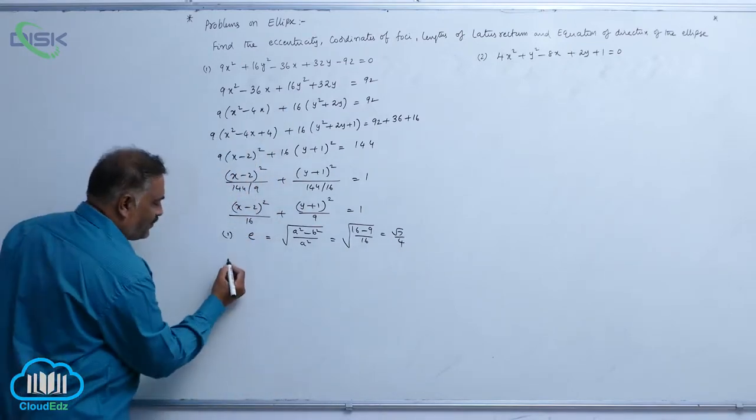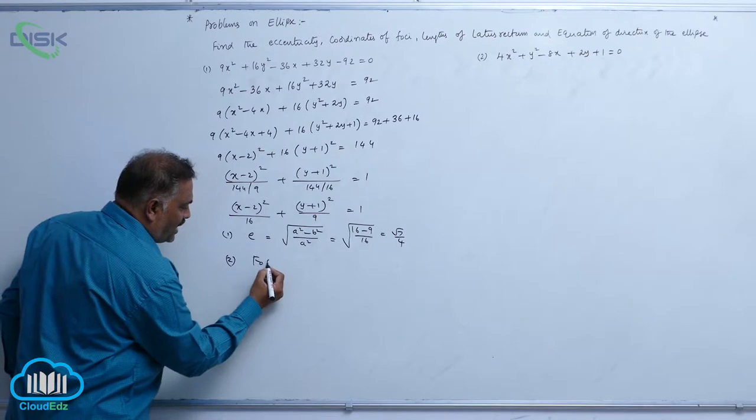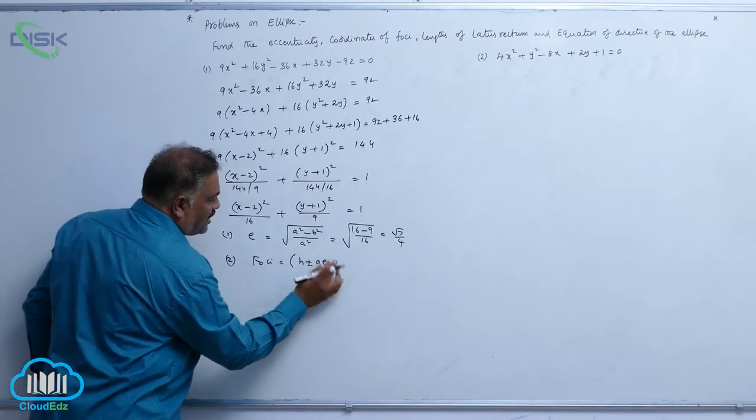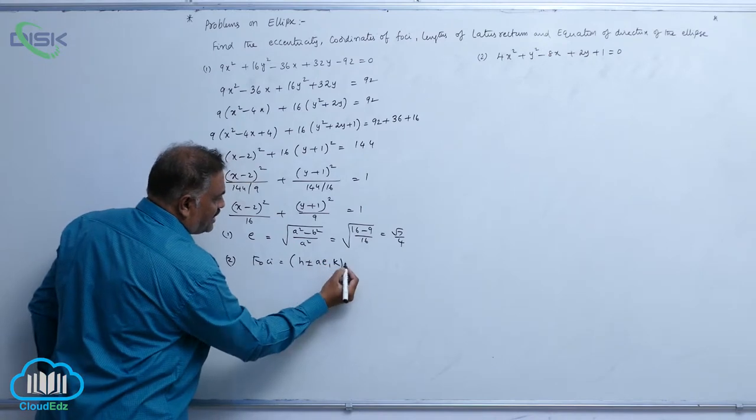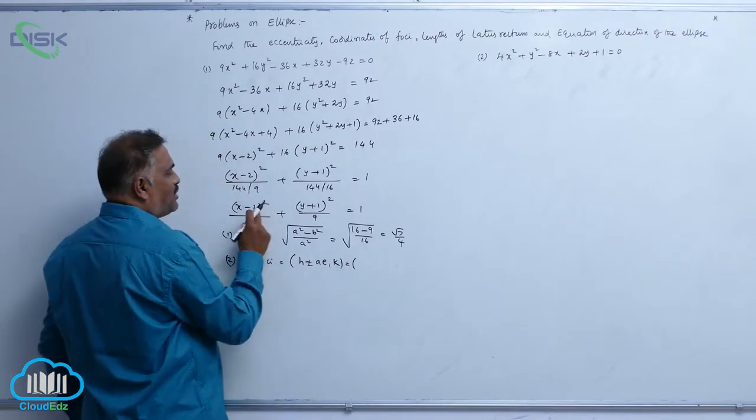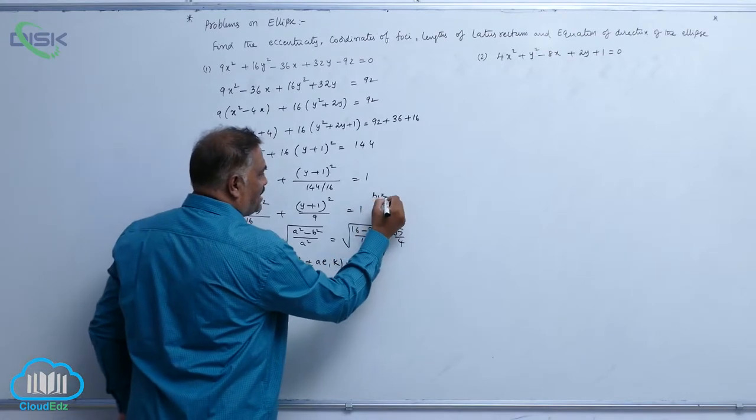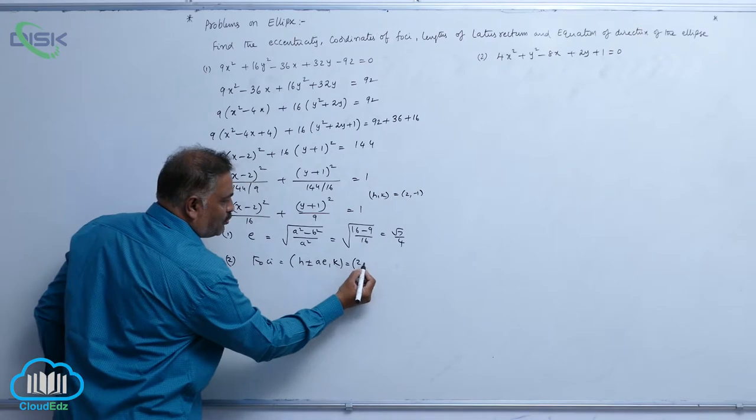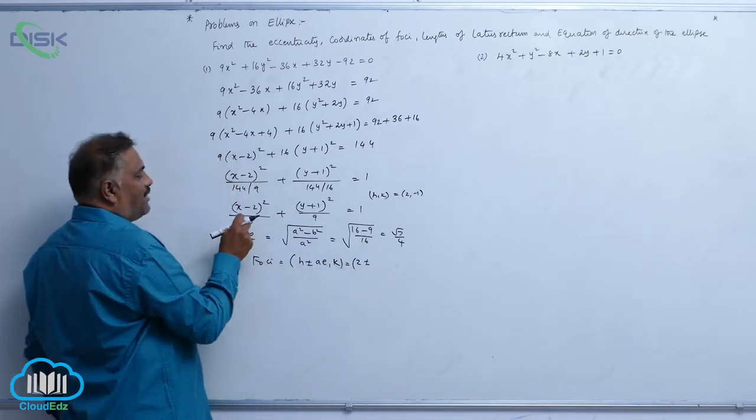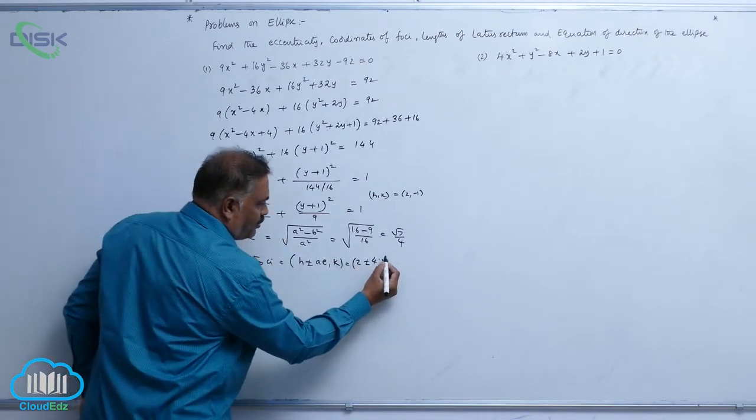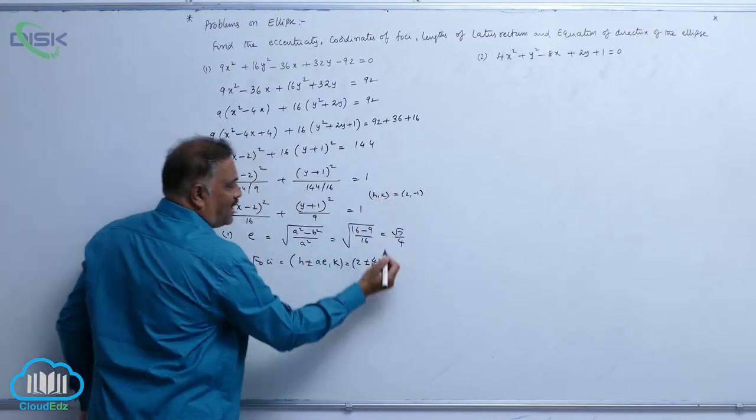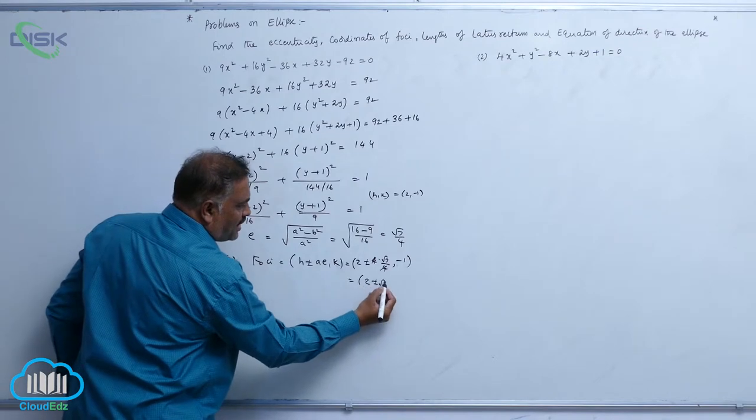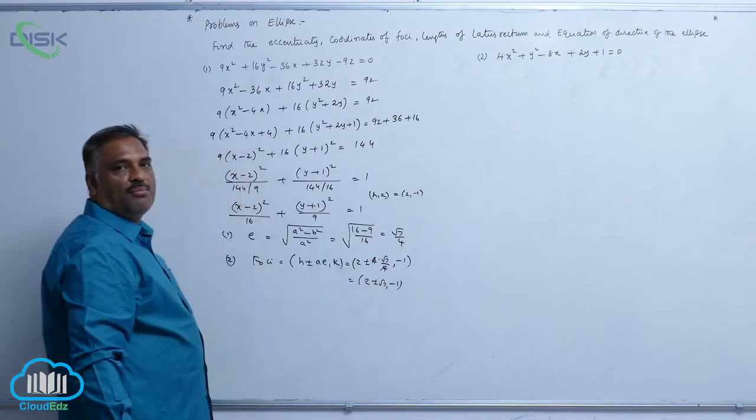Second comes foci. So foci is equal to h plus minus a e comma k. Now what is h value? You observe that h comma k is equal to 2 comma minus 1. So 2 plus minus, a value is 4 into root 7 by 4 comma k value minus 1. This 4 gets cancelled, 2 plus minus root 7 comma minus 1.